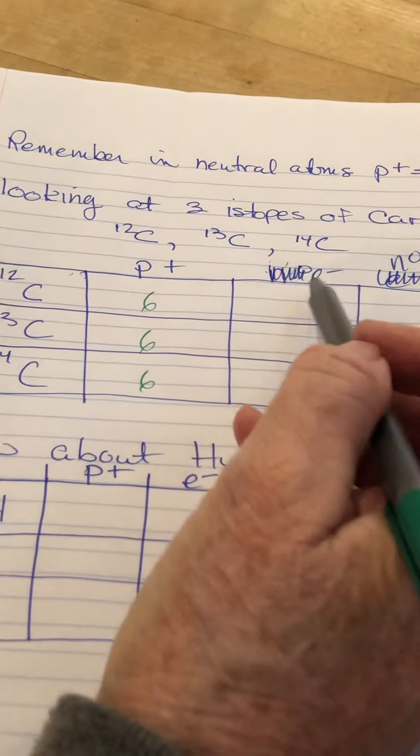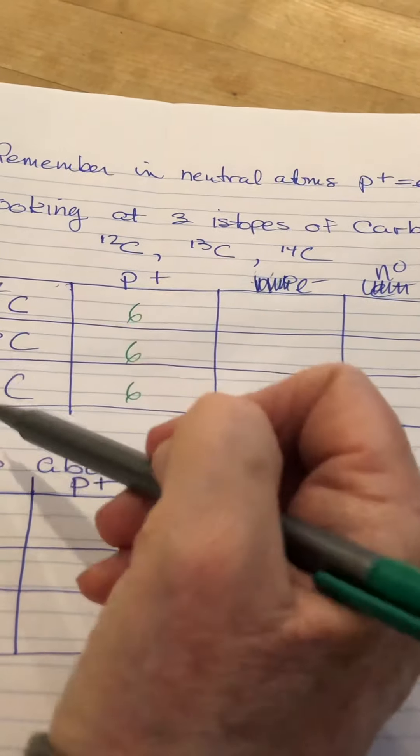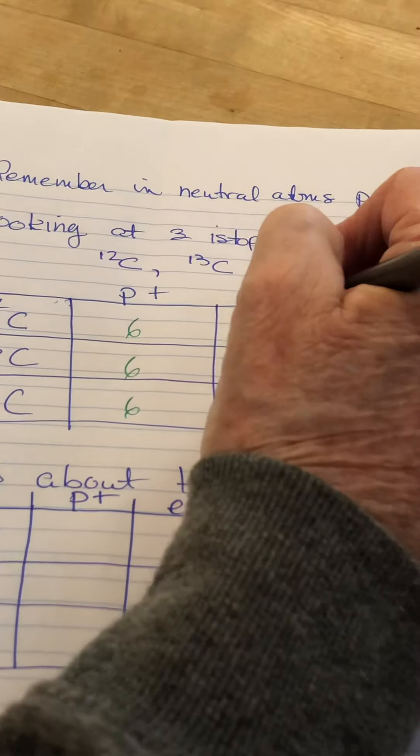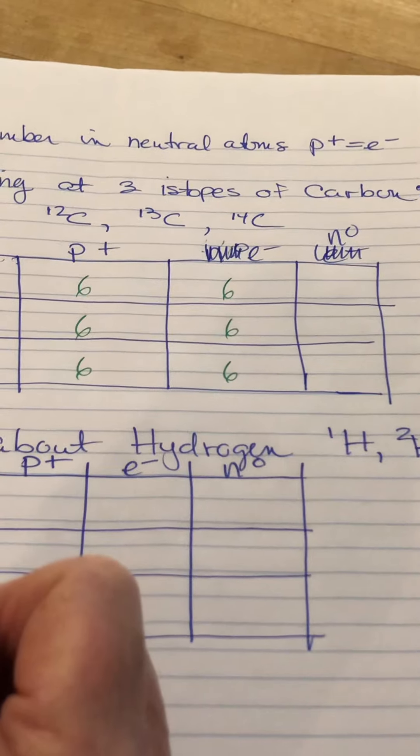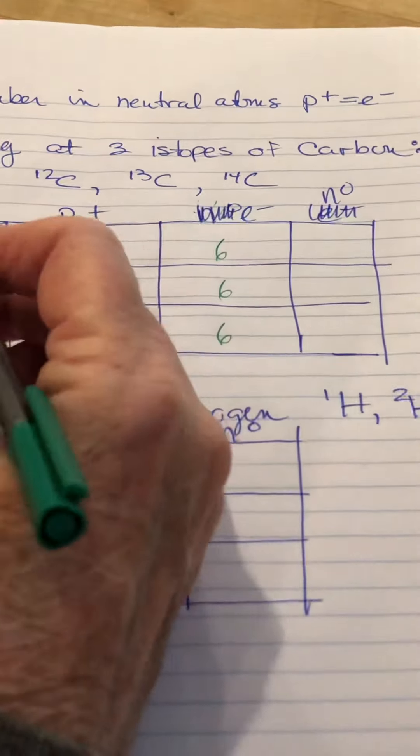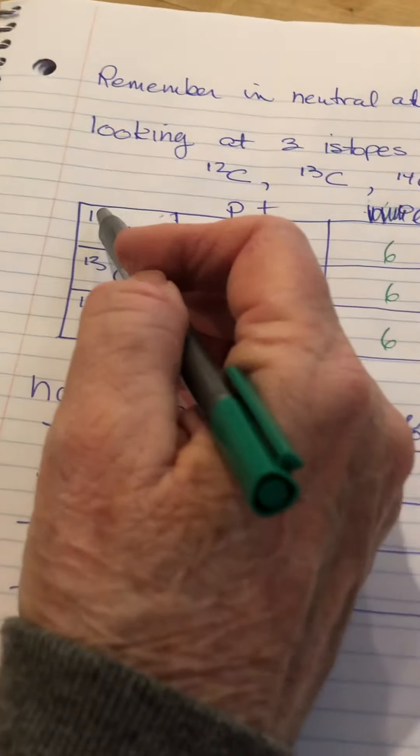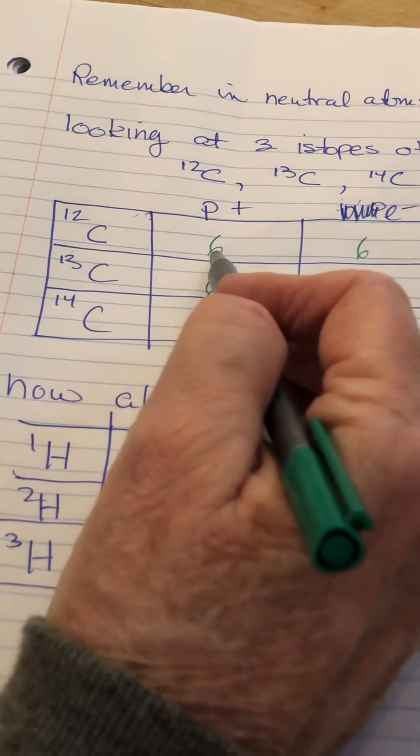Now, I know that the electrons have to equal the protons because these are atoms, not ions. So, again, 6, 6, and 6.